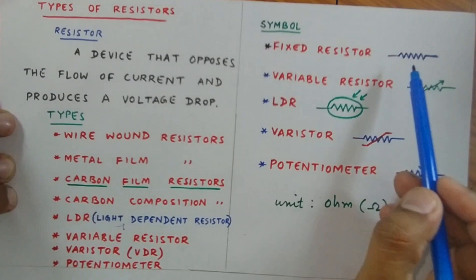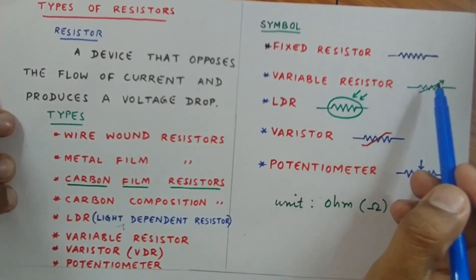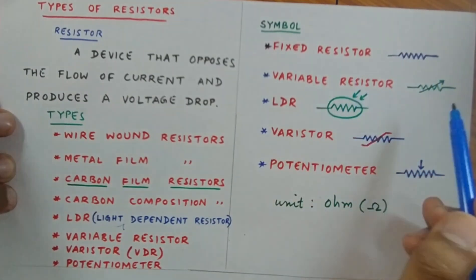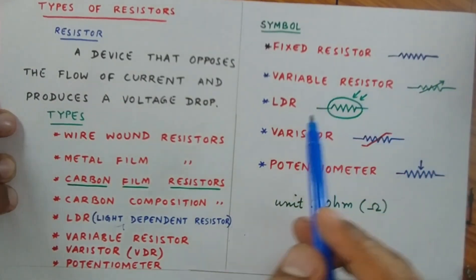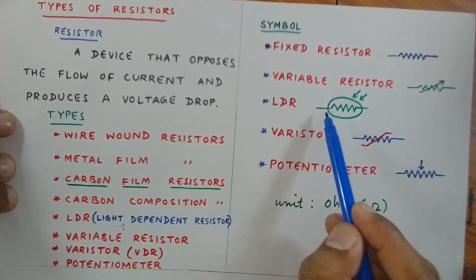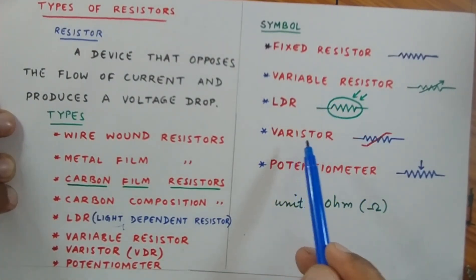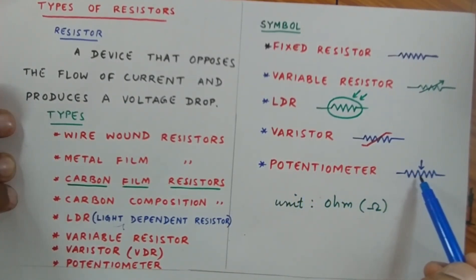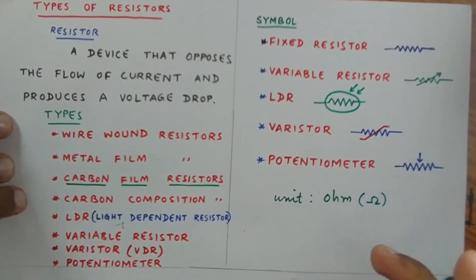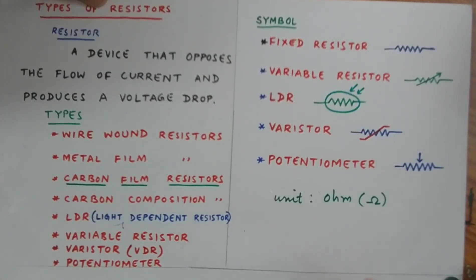In a fixed resistor, if we draw a cross line with an arrowhead, we get the symbol of a variable resistor. Light dependent resistor is represented by this diagram. Varistor is shown by this diagram, and the potentiometer is represented by this diagram. This downward arrow represents that the resistance can be varied. This operation is usually used in televisions and radios to increase or reduce the volume of sound. Thank you very much for watching this video.